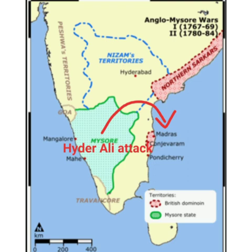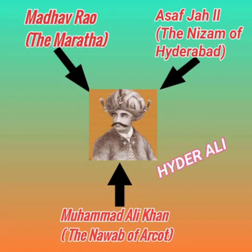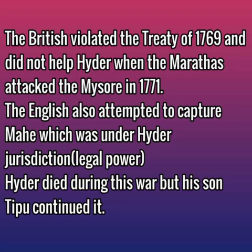The condition of the Treaty of Madras was that they agreed to help each other. In 1771, the Marathas attacked Mysore. However, the British violated the Treaty of 1769 — they took a back step and did not help Hyder Ali. Hyder Ali was very disappointed with the British, and later Tipu Sultan also became very disappointed with them.